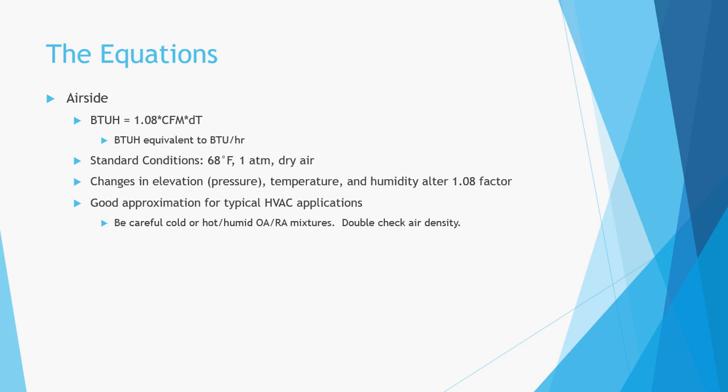BTUH equals 1.08 times CFM times delta T. BTUH is equivalent to BTU per hour — you will see both notations used in the industry. This equation is for sensible heating or cooling. Sensible means that the heat added or removed changes the temperature. Latent load is the energy associated with adding or removing moisture without a change in temperature.